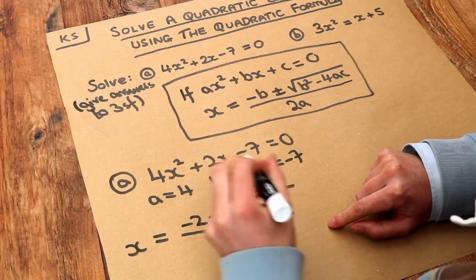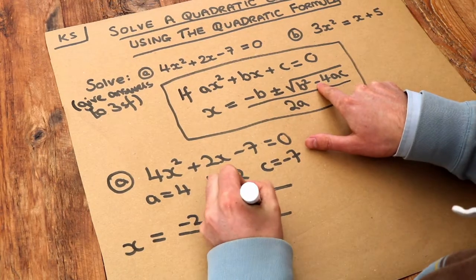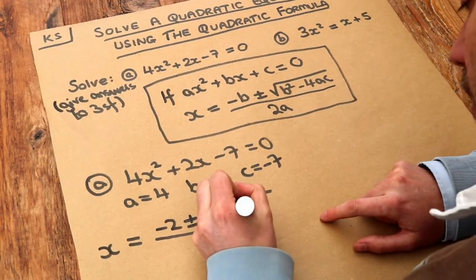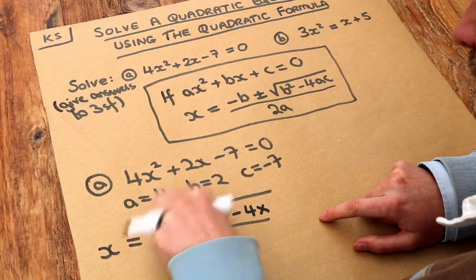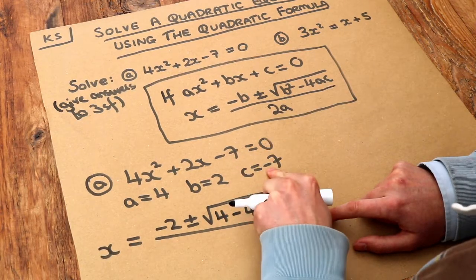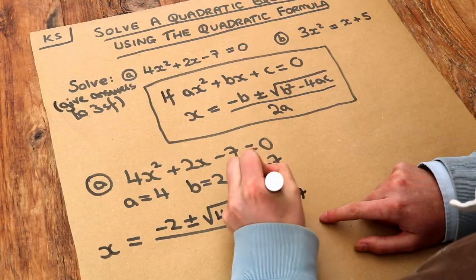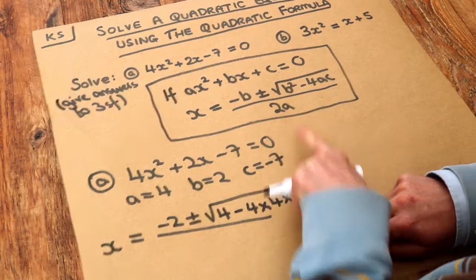I'm just going to write 4, and then minus, and then 4ac, so 4 times a which is 4 times by c which is minus 7, all over 2a. Well 2 times a is 2 times 4 which is 8.